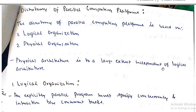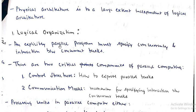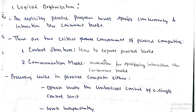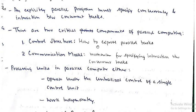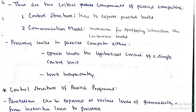Physical architecture is to a large extent independent of logical architecture. In logical organization, an explicitly parallel program must specify concurrency and interaction between concurrent tasks. There are two critical components: control structure and communication model. Control structure specifies how to express parallel tasks, and communication model specifies the mechanism for interaction between concurrent tasks.